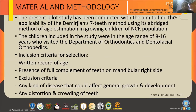The major aim of my study is to find the applicability of the Demirjian method by using its average method of age estimation in growing children of the NCR population. I have taken a sample size of 20 — 10 males and 10 female children — in the age group of 8 to 16 years, by visiting the Department of Orthodontics and Dentofacial Orthopedics of SGT Dental College in Gurgaon.